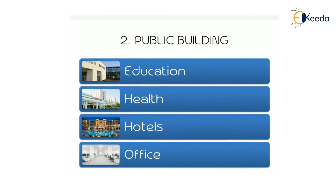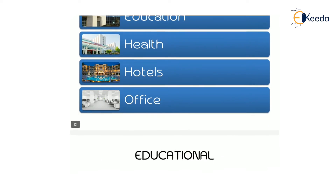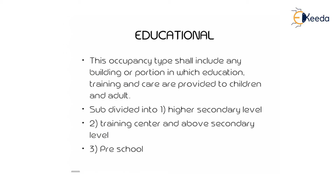Public buildings are classified as educational buildings, health buildings, hotels, and offices. An educational building is an occupancy type that includes any building or portion in which education, training, and care are provided to children or adults. Educational buildings are subdivided into higher secondary level, training centers and above secondary level, and preschool.